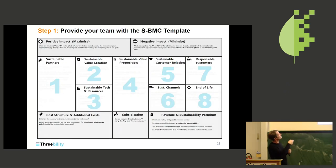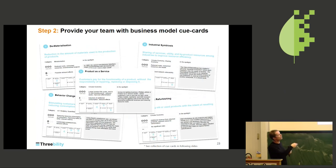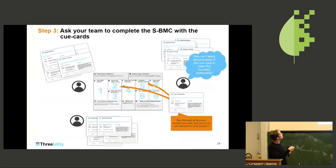So then you just take this empty canvas and you distribute all these little cue cards amongst the team. In the team you discuss these cue cards and you see whether any of those could be relevant for your sustainable business model canvas. That's actually quite popular and is a lot of fun to do.